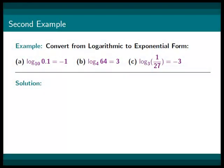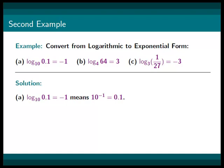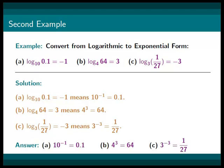In this example, we are asked to convert from logarithmic to exponential form. We have: log base 10 of 0.1 equals negative 1; log base 4 of 64 equals 3; and log base 3 of 1 over 27 equals negative 3. For part a, log base 10 of 0.1 equals negative 1 means 10 to the power of negative 1 equals 0.1. For part b, log base 4 of 64 equals 3 means 4 cubed equals 64. And log base 3 of 1 over 27 equals negative 3 means 3 to the power of negative 3 equals 1 over 27. In conclusion, we have 10 to the power of negative 1 equals 0.1, 4 cubed equals 64, and 3 to the power of negative 3 equals 1 over 27.